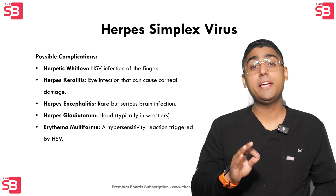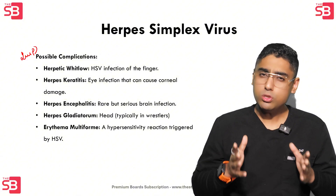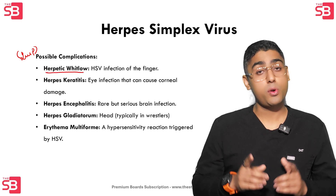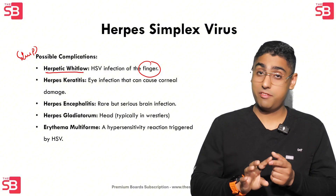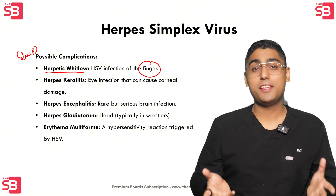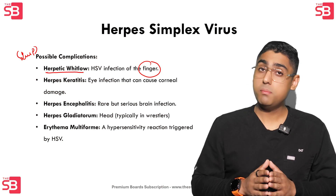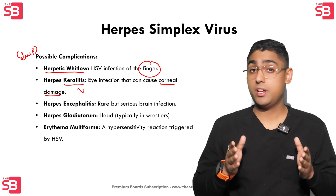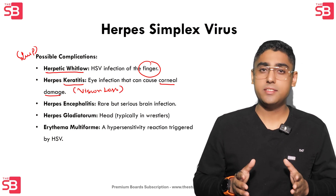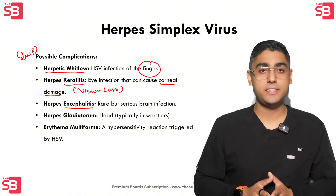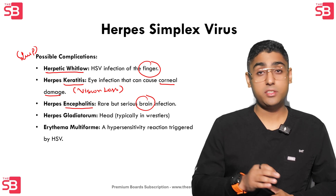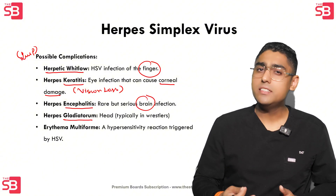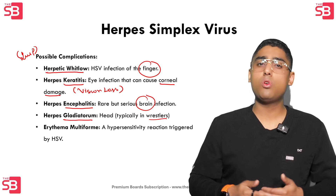Now let's look into some possible complications associated with HSV infections. While most herpes infections are manageable, complications can still occur. One important one to remember for your exam is herpetic whitlow, which is when the virus infects the finger — it is quite painful and often affects healthcare workers exposed to the virus. The second complication is herpes keratitis, an eye infection that can cause corneal damage and, if left untreated, may even lead to vision loss. In some rare cases, HSV can lead to herpes encephalitis, an infection of the brain, which can be life-threatening and requires immediate attention. We also have herpes gladiatorum, commonly seen in athletes involved in contact sports like wrestling.